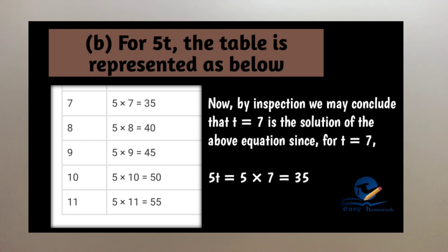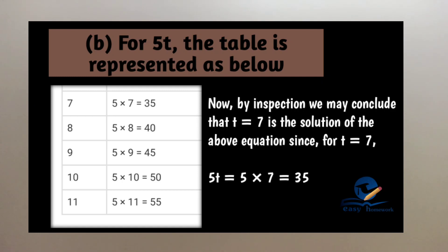Now, by inspection, we may conclude that T equal to 7 is the solution of the above equation. Since 5T equal to 5 into 7 is equal to 35. Clear on the question. If we complete the table, we get the solution T equal to 7 for 5T equal to 35.